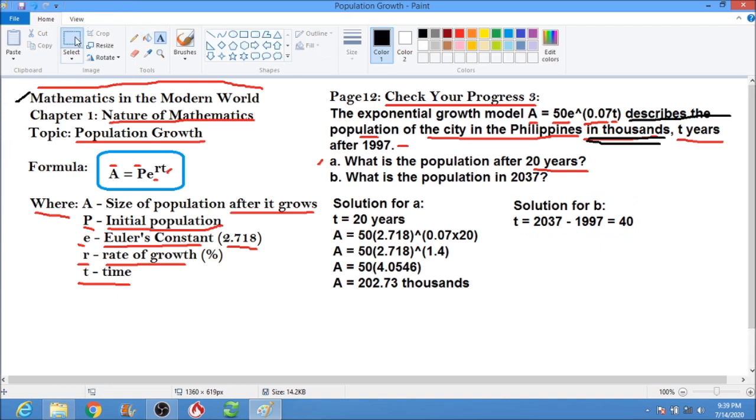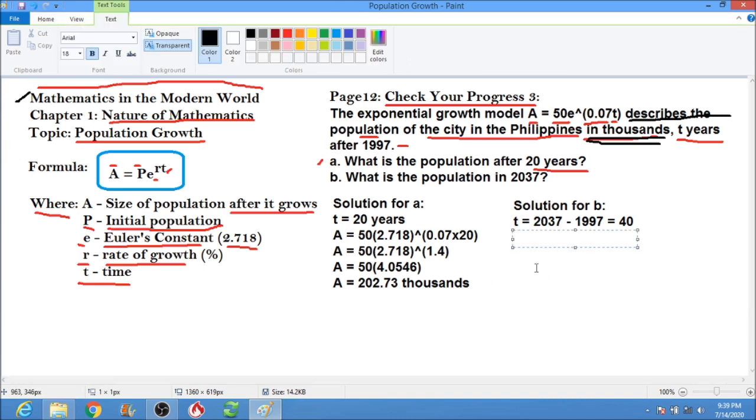Then, using the formula. The formula will be A equals 50 times 2.718 to the power of 0.07 times 40.